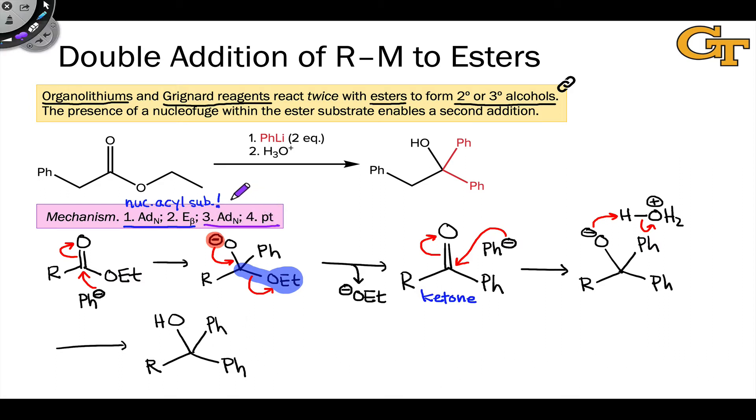Notice that the last two steps, steps three and four, amount to a nucleophilic addition process. And finally, one more thing I'll mention is that hydride sources, like lithium aluminum hydride, react very similarly. And we've seen this previously. Just replace Ph minus with H minus. And you'll see identical reactivity in the reduction of esters with lithium aluminum hydride.